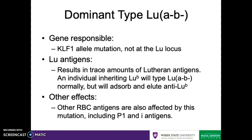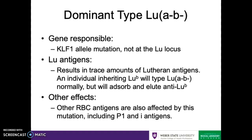An individual might inherit some Lutheran B from the Lutheran gene, but with regular typing they'll show up as A and B negative. However, if you use more advanced techniques like absorption and elution, you'll find that their red blood cells will actually react with anti-Lutheran B after all. Another interesting effect from this KLF1 mutation is that other antigens from other systems will also be affected — that includes P1 and I antigens, as well as a few others. It's worth recognizing that because these individuals do have Lutheran antigens on their blood cells, they are not going to be making anti-Lu3 antibodies, as the next group of inheritance patterns will.